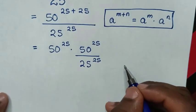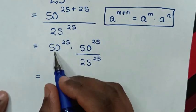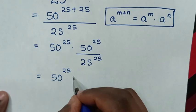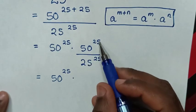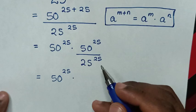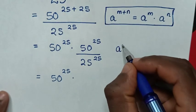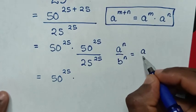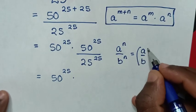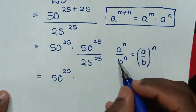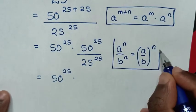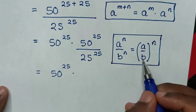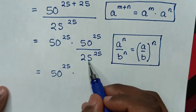Then in the next step, it will be equal to this 50 power of 25 times — and in here we have a division of exponents with the same power of 25, so we apply the rule: a power of n over b power of n is equal to (a over b) to the common power of n. So because in here it is a over b, it will be 50 over 25, to the power of 25.